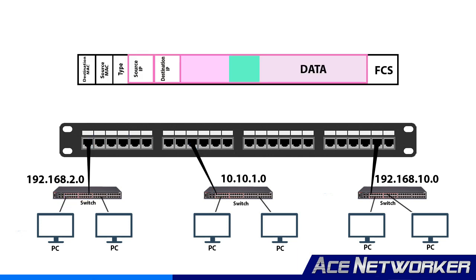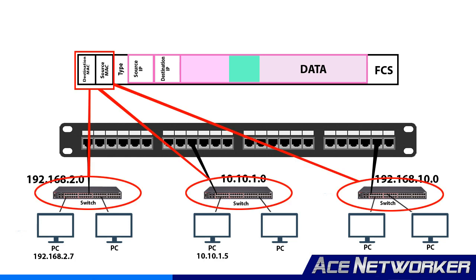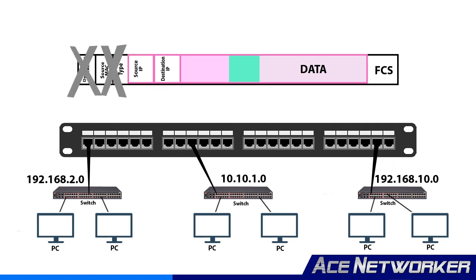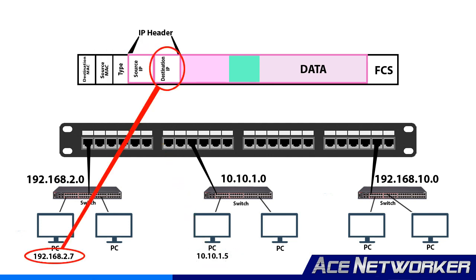As discussed in the last session, switches use MAC addresses to determine where traffic and data needs to be sent, reading this from the frame portion of the data. Routers, however, deal with IP addresses and don't much care about source and destination MAC addresses in the frame header. Instead, they look at the source and destination IP addresses in the packet portion of the data to determine what device sent it, which network it's in, and what network the destination device is in.